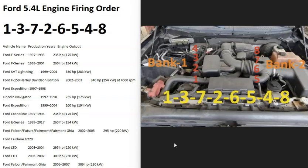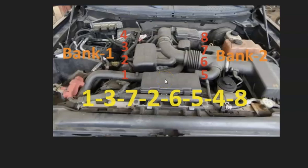The firing order is 1-3-7-2-6-5-4-8. The cylinder locations, starting on the left side when looking directly at the engine, are 1-2-3-4. On the other side of the engine, they're 5-6-7-8.